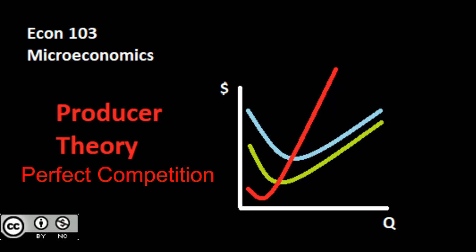In our last video, we took a look at the determinants of market structure, then brought those forward to examine the assumptions of a perfectly competitive market. We found that competitive firms would be price takers, and if they're price takers, price equals average revenue equals marginal revenue. Now we're going to take all that algebra and theory and bring it forward to look at how firms maximize profit and find that optimal level of output — that Q star.